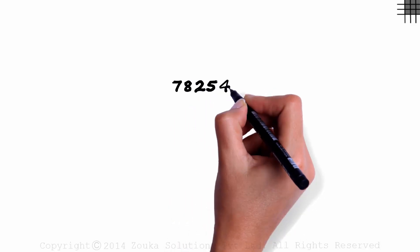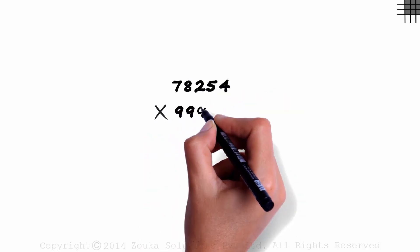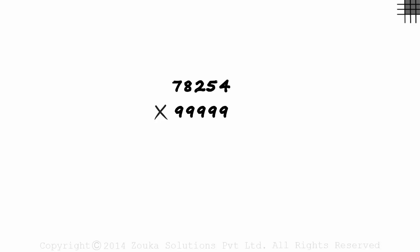Seventy-eight thousand two hundred and fifty-four multiplied by ninety-nine thousand nine hundred and ninety-nine. Try solving this in five seconds. Your time starts now.